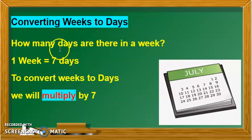For this we must know how many days are there in a week. Yes, one week has seven days. So to convert weeks to days we will multiply by seven. Let us see one example.